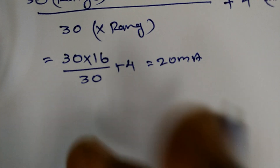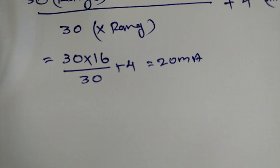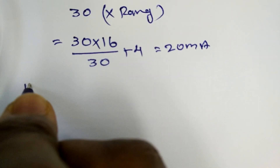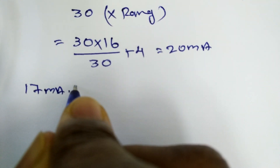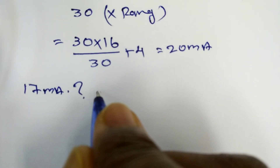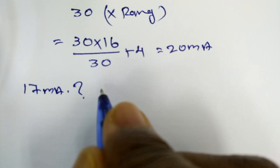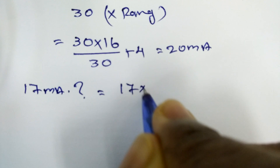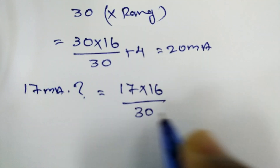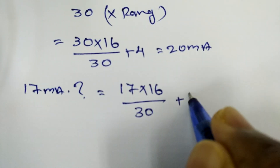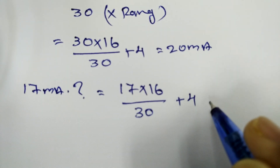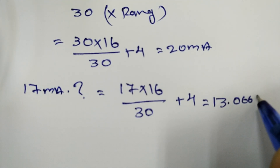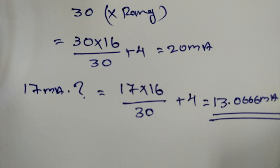Suppose we have a client's requirement of 17 mA input value. We will substitute the value of 17 into the equation: 17 multiplied by 16, divided by the 30 range, plus 4. This calculates to 13.0666 mA.